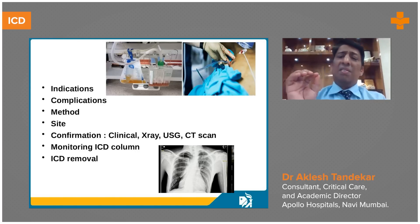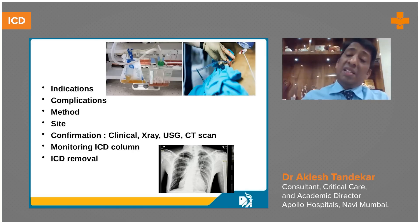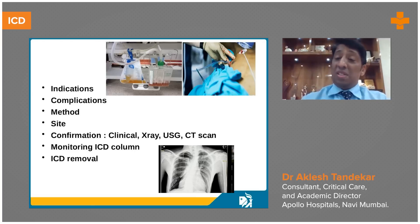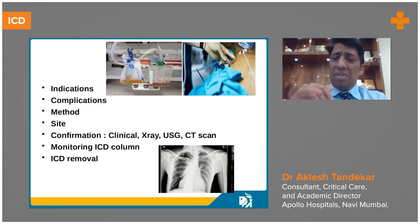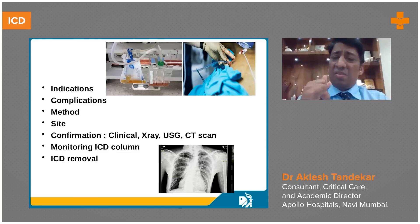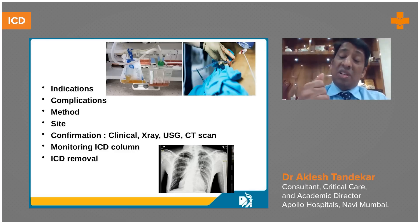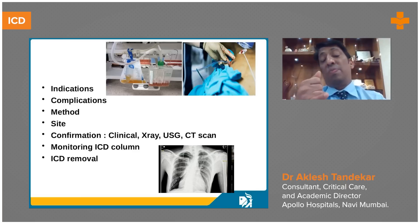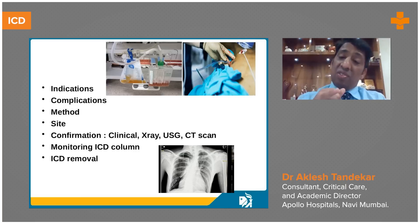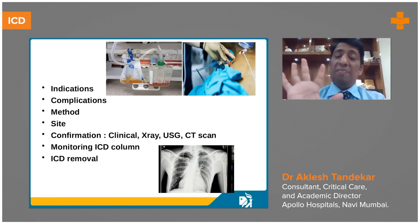Proper assessment of ICD need is important. Generally the ICD is inserted in the fifth intercostal space under all aseptic precautions, with skin and fascia dissection. You must feel the rib — the inferior border is painful due to the neurovascular bundle, so you go on the upper border of the rib where there is no neurovascular bundle and it is less painful. Once the rib is identified, you feel for the pleura, puncture the pleura, and put the ICD. Trocar cannula is used nowadays.